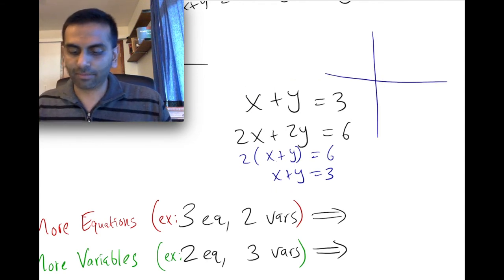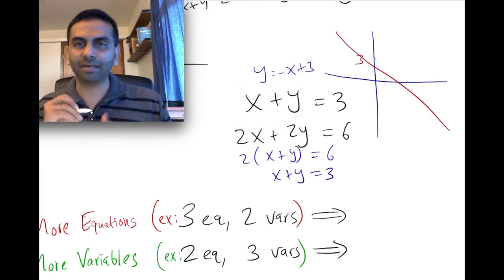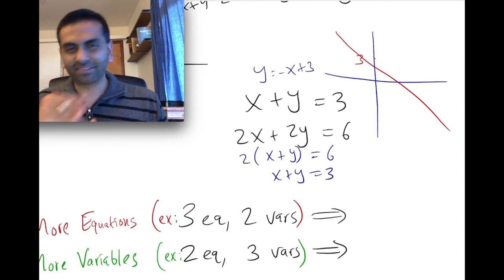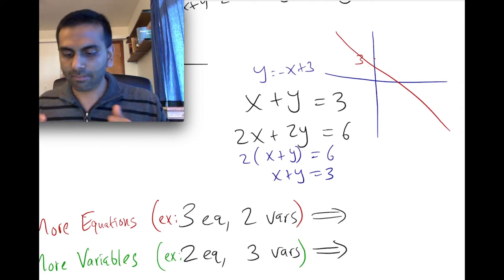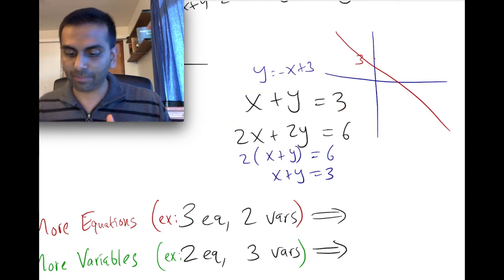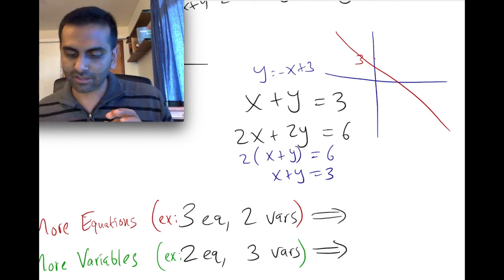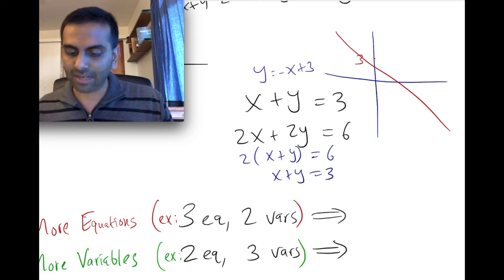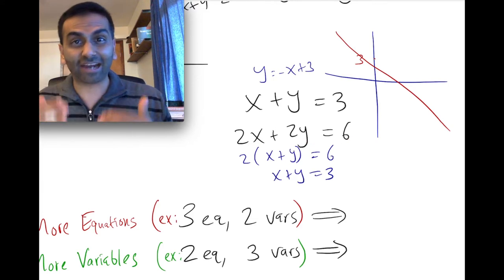If you graph both lines, they're both the same line: y equals negative x plus 3, with intercept 3 and slope negative 1. So where do they intersect? If it's the same line, they intersect everywhere — there are infinitely many solutions. For example, x equals 1 and y equals 2 works, or x equals 0 and y equals 3. There are infinitely many points that add up to 3, and whenever x plus y equals 3, then 2x plus 2y will necessarily equal 6.